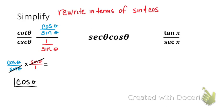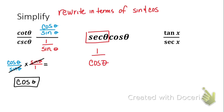So cotangent divided by cosecant is equal to cosine. Now for the second example — secant and cosine are sisters, meaning they are reciprocals. When you multiply two things that are reciprocals, you get one. So when I take secant and write it as the reciprocal identity, that becomes one over cosine theta, and that's multiplied by cosine, which gives you one. The answer is one.